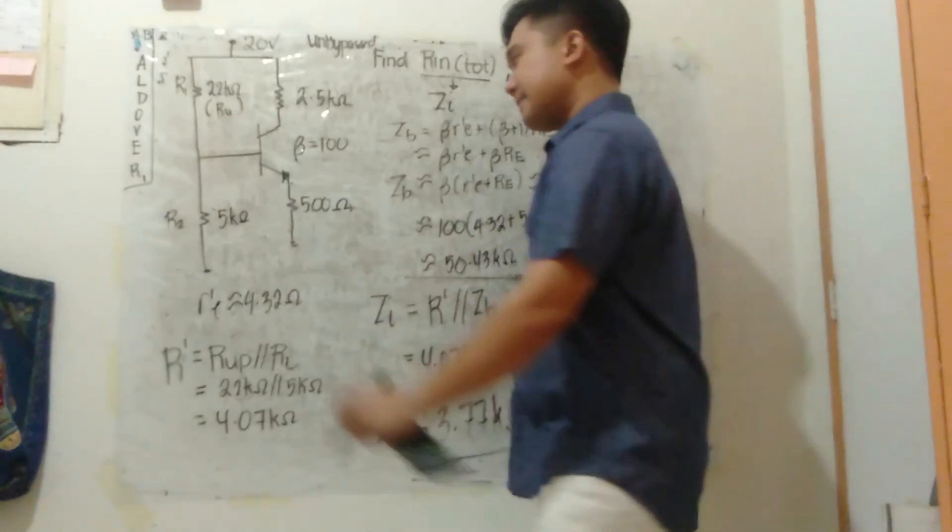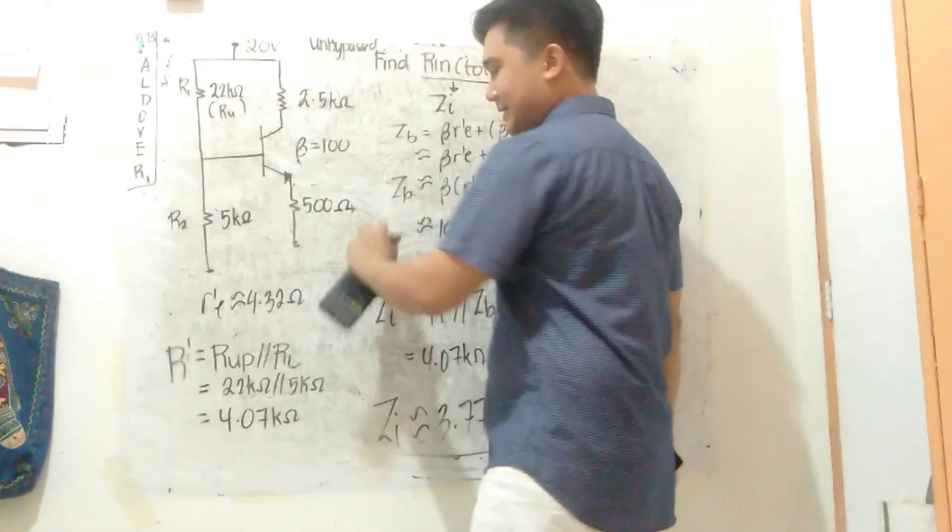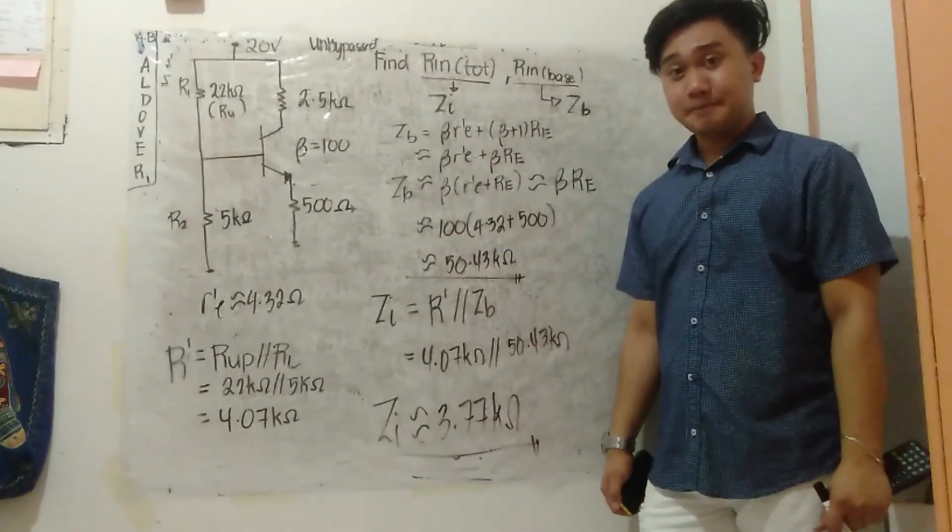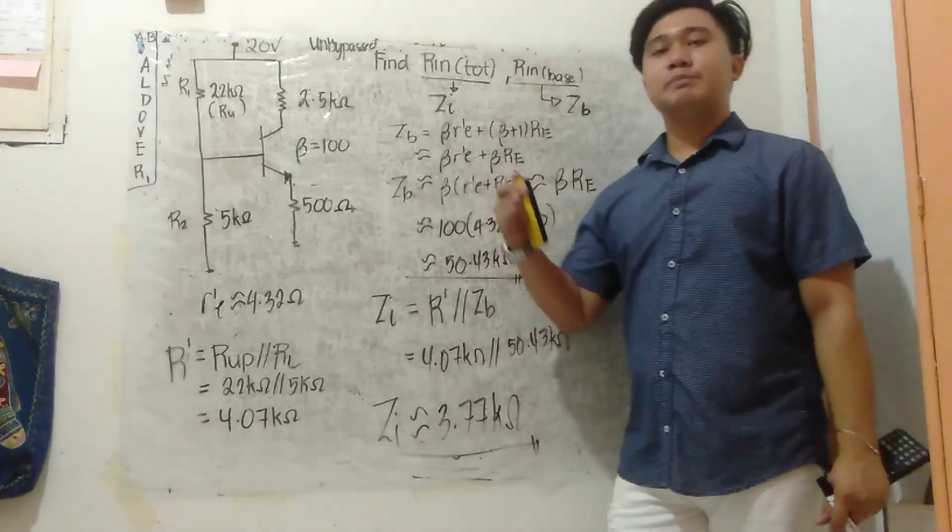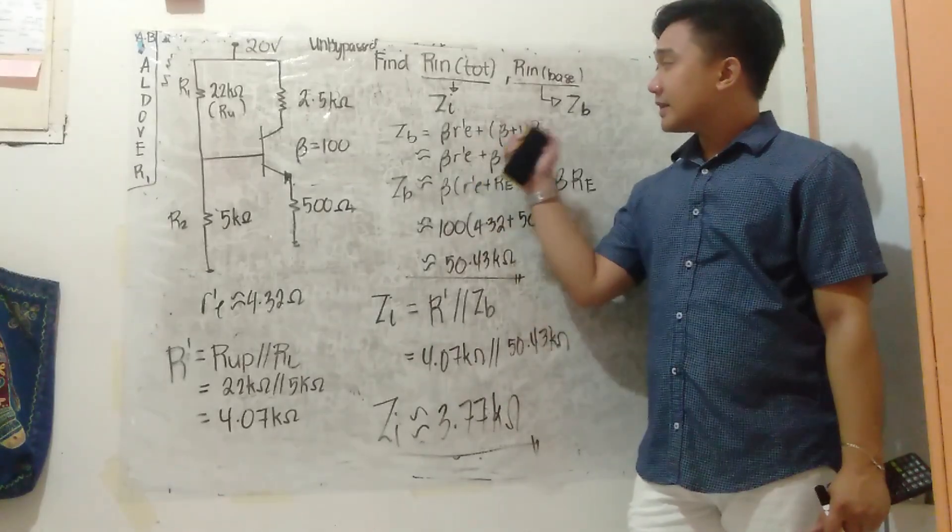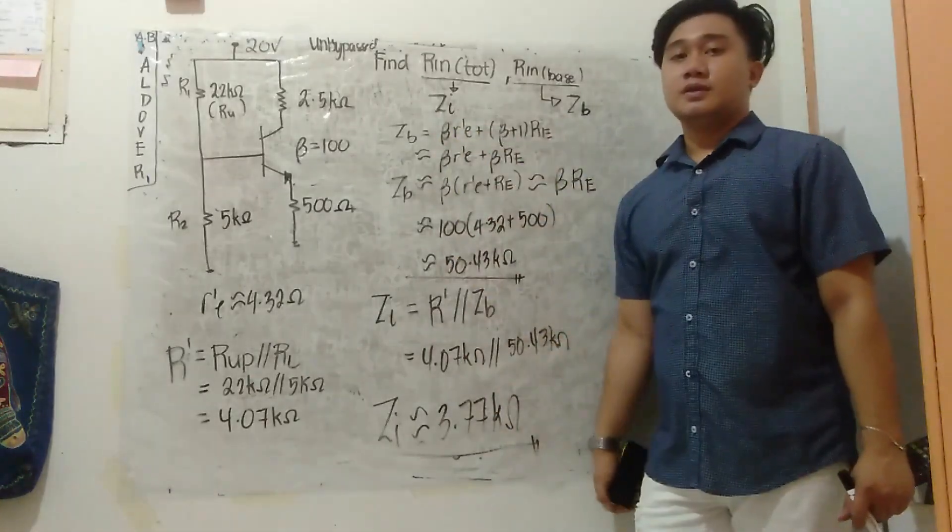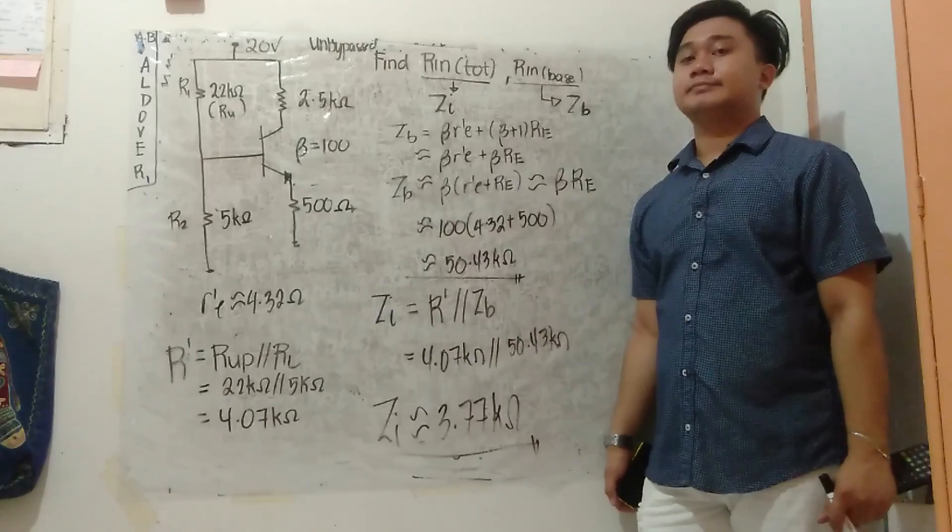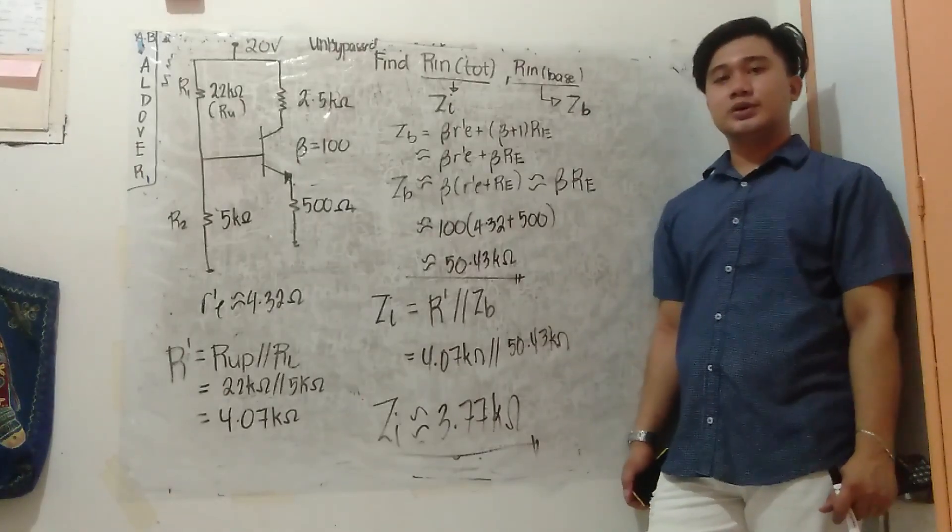So that's the way to find R_in total and R_in base, or ZI and ZB, when our circuit is unbypassed. Unbypassed means we don't have the capacitor here. And you saw previously in the problem when it's bypassed, that's where I got the formula from. Copy your notes.